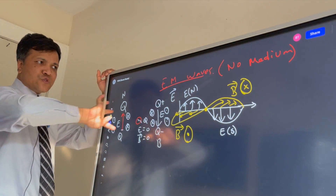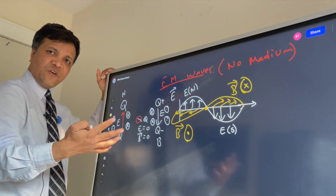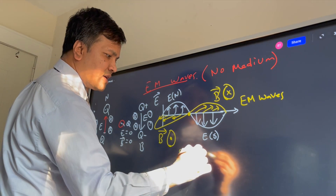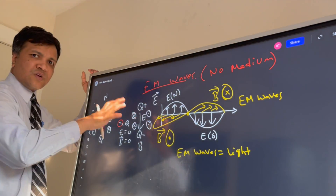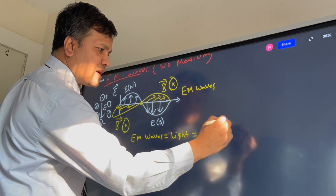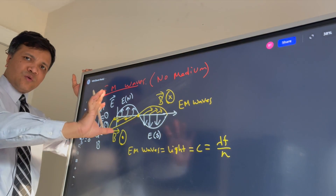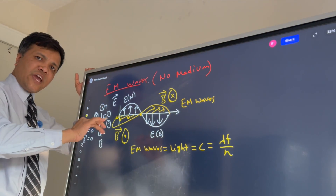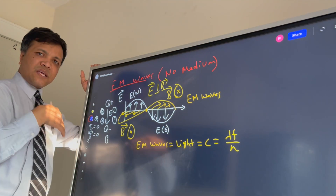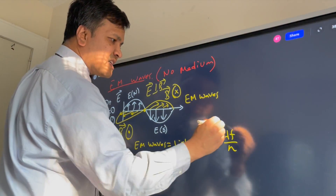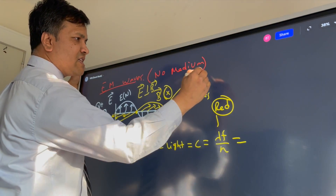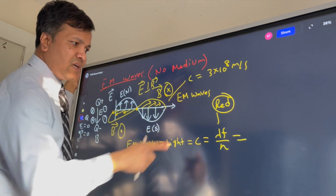This is the EM wave, created by the oscillating electric and magnetic fields. EM waves are actually light. Light travels at speed C, where C equals lambda times frequency divided by n. When EM waves propagate in a vacuum, with the electric and magnetic fields perpendicular to each other, we perceive them as light. Let's consider red light as an example.